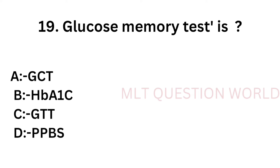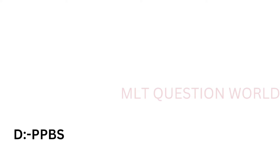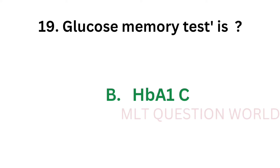Question number 19: Glucose memory test is — option A: Glucose challenge test (GCT), option B: HbA1c, option C: Glucose tolerance test (GTT), option D: Postprandial blood sugar (PPBS). The correct answer is option B, HbA1c, that is glycated hemoglobin. Glucose memory test is HbA1c.